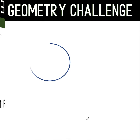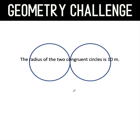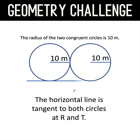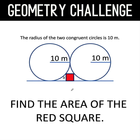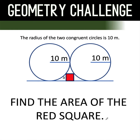Hey everyone, here's our math problem for today. We are given two congruent circles that are tangent externally. The radius of each circle is 10 meters and we draw a horizontal line. At this space, let's insert a square with a side length of x units, and we would like to find the area of this red square. You can pause the video and see if you can solve this interesting geometry problem.